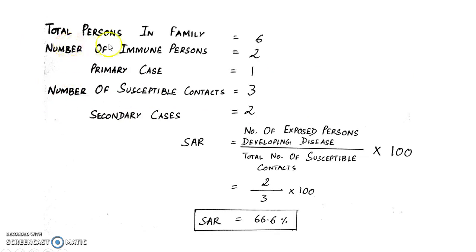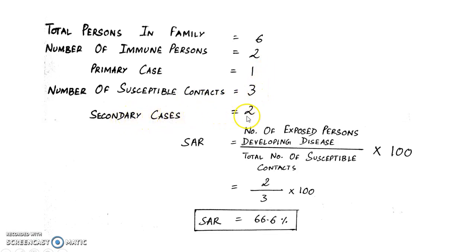The total persons in the family is 6. The number of immune persons is 2. The primary case is 1. So the number of susceptible contacts is 6 minus 2 minus 1, equal to 3. The secondary cases reported was 2. So secondary attack rate is equal to number of exposed persons developing disease divided by total number of susceptible contacts, into 100. In this case, it is 2 by 3 into 100. So secondary attack rate is 66.6%.